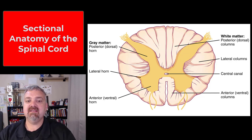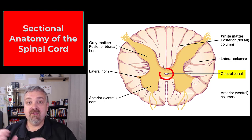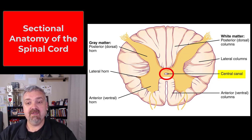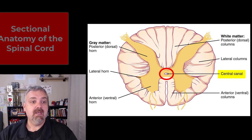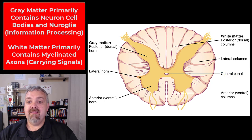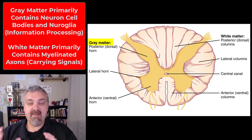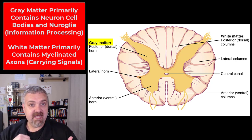Here we see a slice of the spinal cord. Right in the middle you have the central canal, so that's going to be that empty or hollow canal full of cerebrospinal fluid that's continuous with the ventricles of the brain. And then big picture, you see two main things here. You see the gray matter, which surrounds that central canal. The gray matter is going to be where the nuclei are.